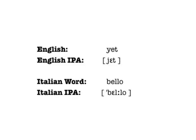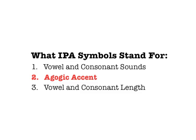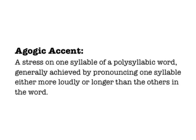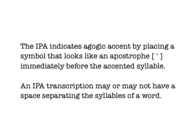Although each symbol will stand for a similar sound in every language, each language kind of has its own version of sounds. For example, the IPA open E is used in the English word 'yet' and in the Italian word 'bello', but you can hear that those are not actually identical vowels. In addition to vowel and consonant sounds, the IPA can also show agogic accent — a way of describing the phenomenon that if a word has multiple syllables, usually one will be stressed more than the others, either by being pronounced slightly louder or longer.